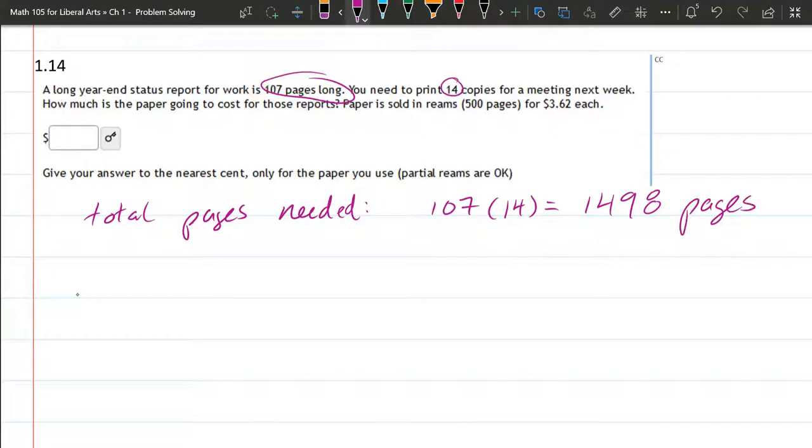Now this doesn't say double or single sided, so we're just going to assume that's just the number of pages you need right there. How much is it going to cost? And that's only for the paper you use, partial reams are okay. So it's very unlikely, in fact I can already tell it won't take exactly a multiple of 500. We're super close to a multiple of 500, but not quite.